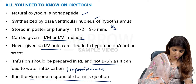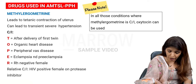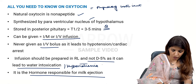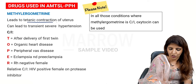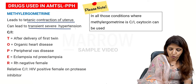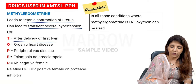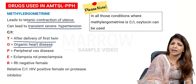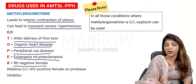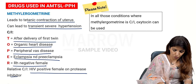Oxytocin is also responsible for milk ejection. Methyl ergometrin leads to tetanic uterine contractions, unlike oxytocin which produces physiological contractions. It acts more on the lower uterine segment and can cause transient severe hypertension. Contraindications can be remembered by the mnemonic TOPPER: T — after delivery of first twin; O — organic heart disease; P — peripheral vascular disease; E — eclampsia/preeclampsia; R — RH-negative females. A relative contraindication is HIV-positive females on protease inhibitors. In all these conditions, oxytocin can be used instead.